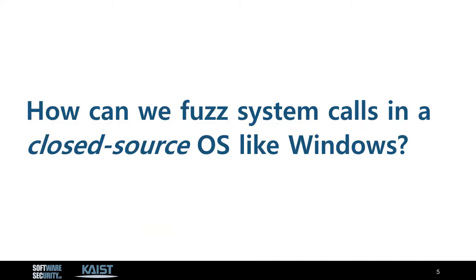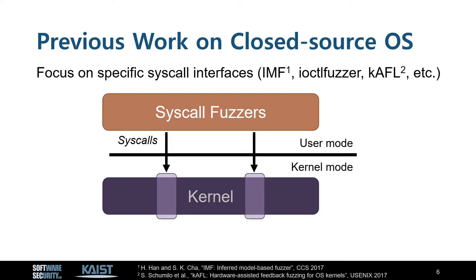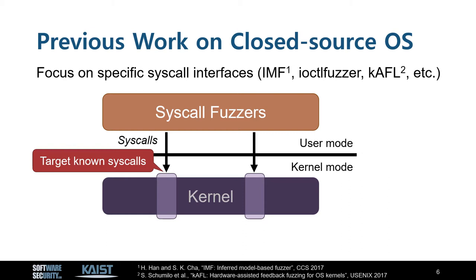But the problem is, how can you fuzz system calls in a closed-source OS like Windows? This is the research problem that our paper addresses. Let's take a look at previous fuzzers for closed-source OSes. Most of them targeted a specific subset of syscall interfaces. Fuzzers often target publicly known syscalls. Even for closed-source OSes, certain syscall interfaces like IOCTL are publicly documented. Therefore, fuzzers like IMF and IOCTL fuzzer target such known syscalls to find bugs.